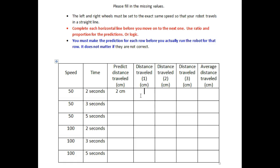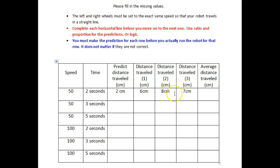Let's say that the first one went six centimeters, and the second one went eight centimeters, and the third one went seven centimeters. You put them all down. Then you have got to fill in the average distance travelled. Remember that average is the figures added up divided by the number of points. Six plus eight is 14, plus seven is 21. We divide it by three because there were three points that you measured, so the average distance travelled is seven centimeters.